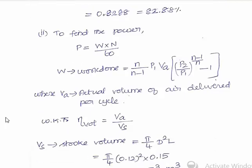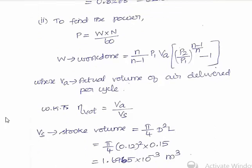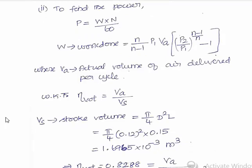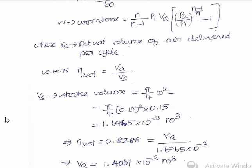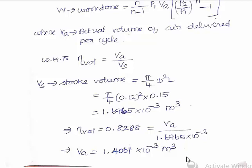The stroke volume VS is calculated using the formula VS = (π/4) × D² × L. Substituting the diameter and stroke length values, VS = 1.6965 × 10⁻³ m³. Using the volumetric efficiency formula VA/VS, and substituting VS and the volumetric efficiency value, VA = 1.4061 × 10⁻³ m³.